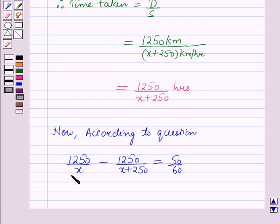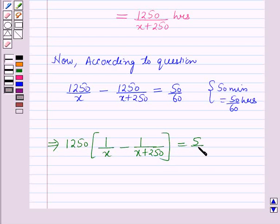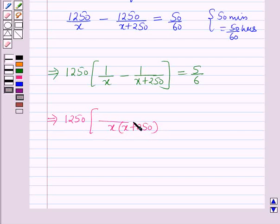That means the difference of the times taken equals 50 minutes, and 50 minutes equals 50/60 hours. Taking 1250 common, this gives: 1250 times (1/x minus 1/(x + 250)) equals 5/6. Simplifying the bracket by combining fractions: 1250 times (x + 250 - x) over x(x + 250) equals 5/6.